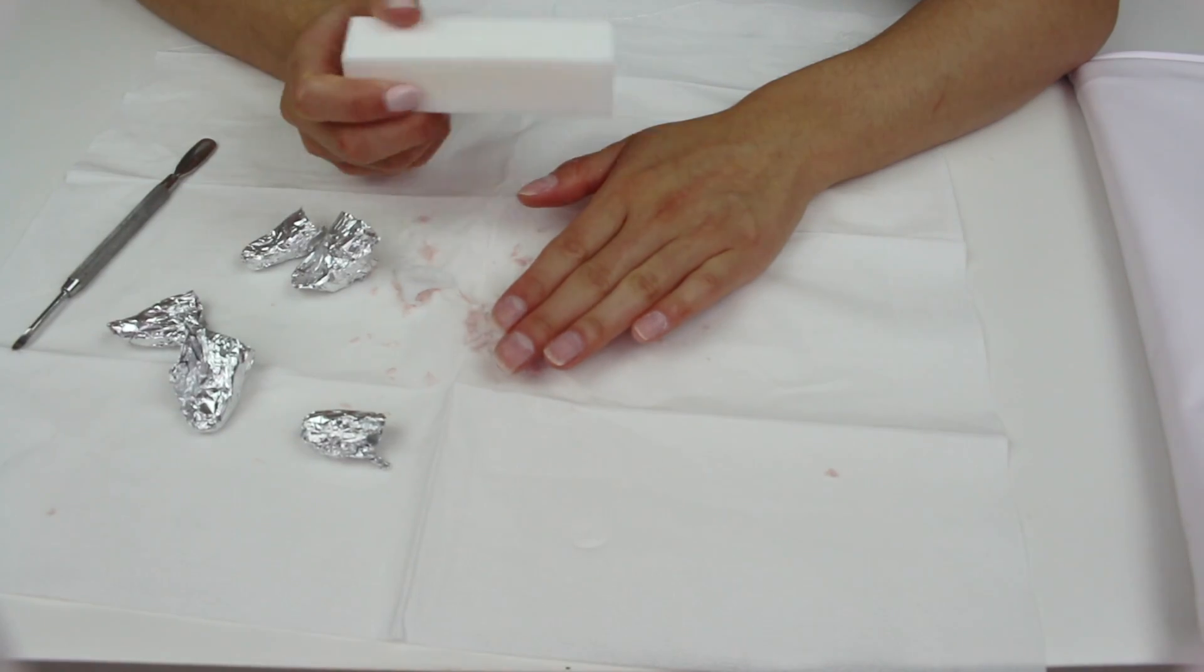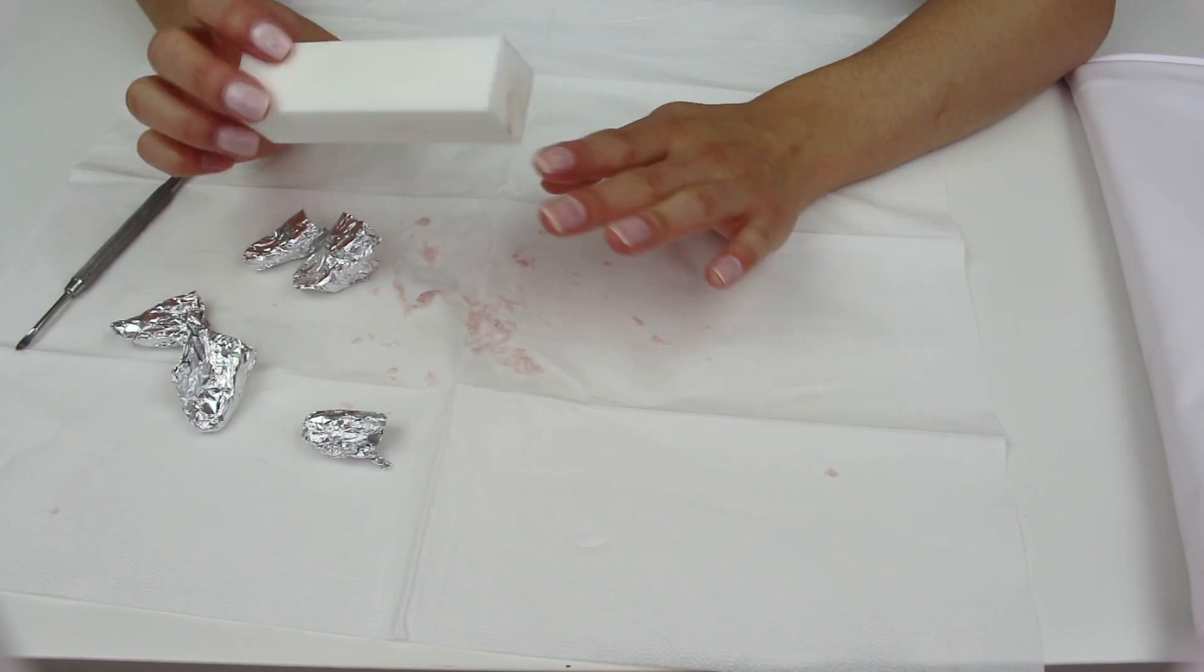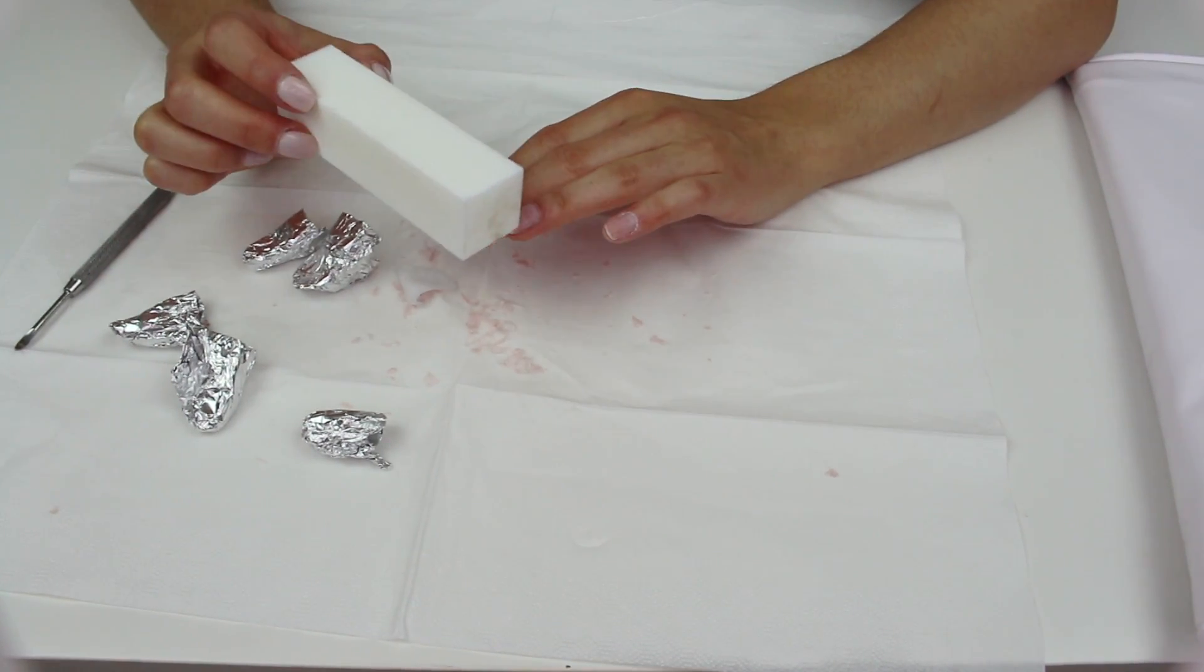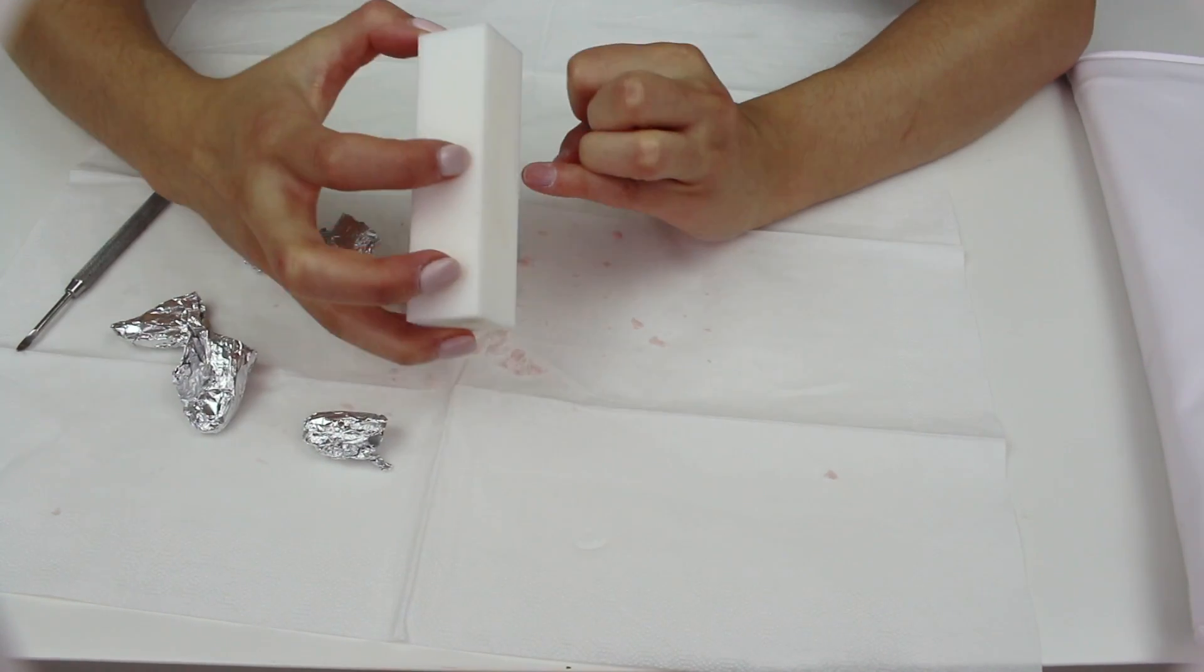The final bit you need to do, I forgot to mention this in the beginning, if you have a buffer block you don't have to do this bit but I like to do it just to get rid of some of the base coat of the gel polish that stays on the nail. So I like to do this bit just to get rid of everything.